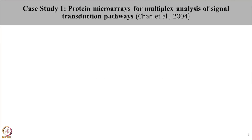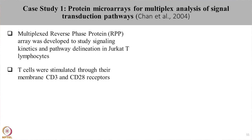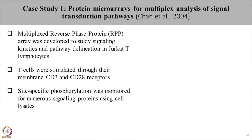Let us start with one of the case studies where Chan et al. have used protein microarrays to understand the pathway of T lymphocytes upon activation with CD3 and CD28 antibodies. Chan et al. made multiplex reverse phase protein microarrays and these protein microarrays were used to study the pathways in T cells which were activated upon stimulation with CD3 and CD28 molecules. In this study, they monitored the site-specific phosphorylation of numerous signaling molecules and performed a time-bound experiment to look into the pathways that are activated upon stimulation with the cell receptors.